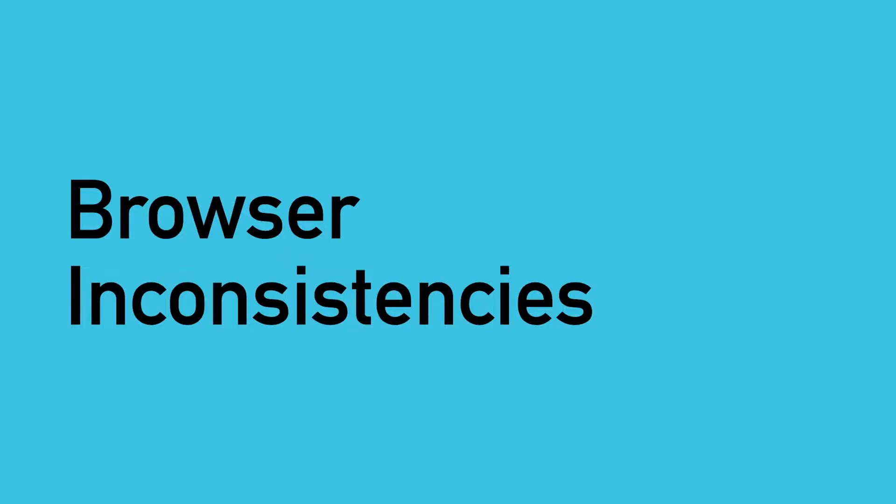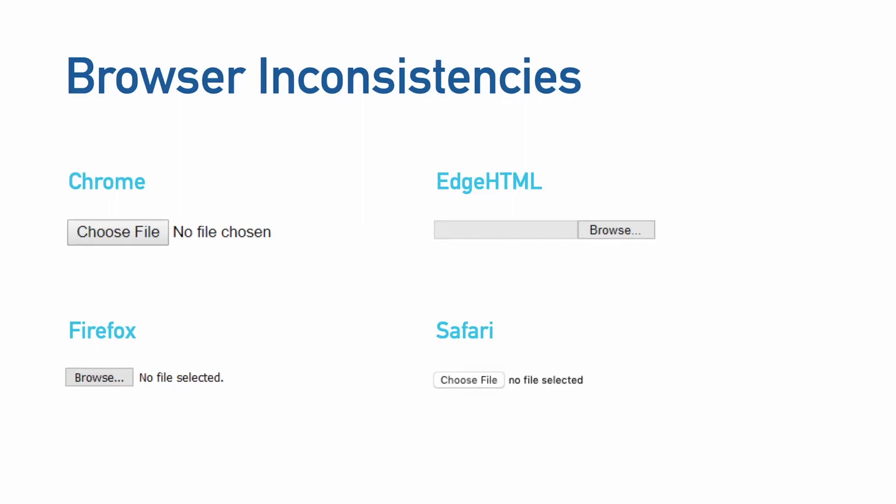On top of that, we have all these browser inconsistencies in the way form controls render. As a web designer before I knew about the web platform, it was so hard to explain to my clients why controls looked differently in different browsers — and that was so frustrating. This boils down to the issue I discussed initially: form controls and their parts were not standardized, so browser engineers built and styled them differently, and these are just some of the top browsers out there today.